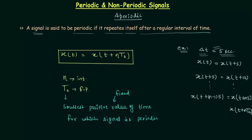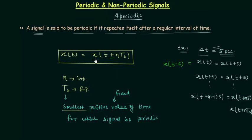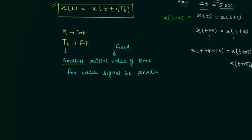We will understand why 'smallest' appears in this definition, but first note another property. Since delta t is 5 seconds, x(t) also remains the same for x(t − 5). So the condition of periodicity includes both plus and minus: x(t) = x(t ± n·T0).